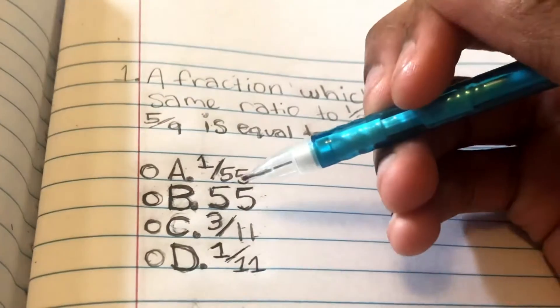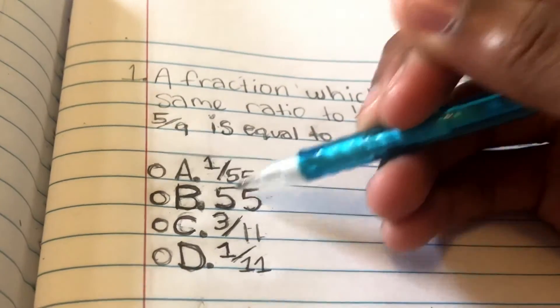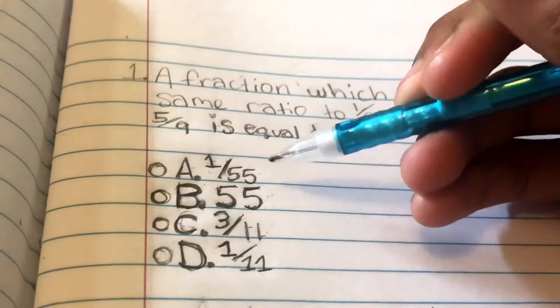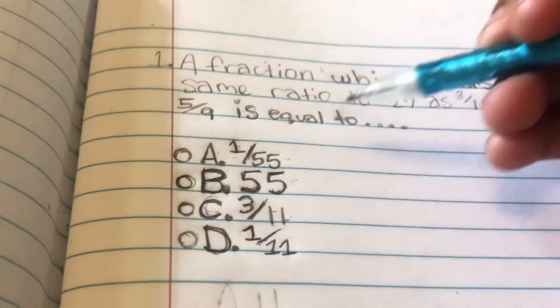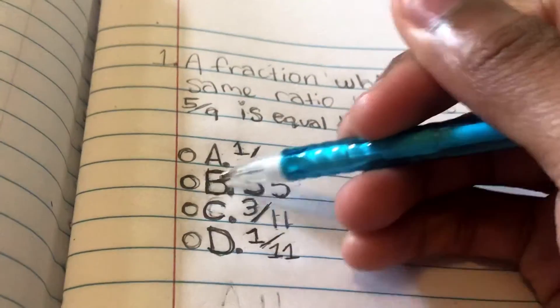As we can see now, we see that B is 55, but it's an outsider because it's not a fraction. You see all the other ones are a fraction, so that means we can go ahead and mark B out.